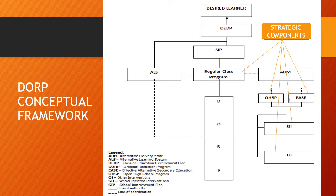The OHSP and EASE are components of DORP that are considered ADM, because the students do not attend the regular class program while enrolled in these two programs. The learners who are enrolled in OHSP as an intervention have an indirect link with the regular class programs since it is a distance learning. However, the learner has the option to join the regular class anytime during the period of study.